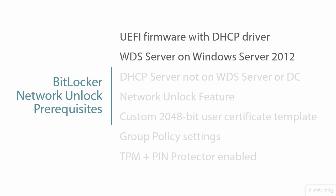Anytime you're dealing with WDS, you also have to have a DHCP server on that network. This DHCP server is very specifically different because it cannot be on the WDS server itself, and it also cannot be on your domain controller. This goes counter to a lot of environments where you have DHCP services co-located with your domain controllers, or in smaller environments co-located with WDS. So you will have to separate those out in order to support BitLocker Network Unlock.